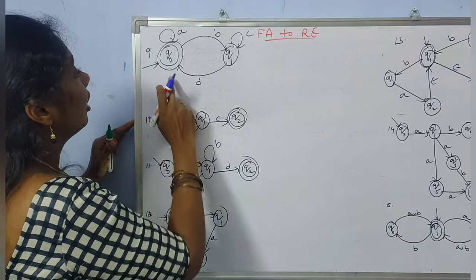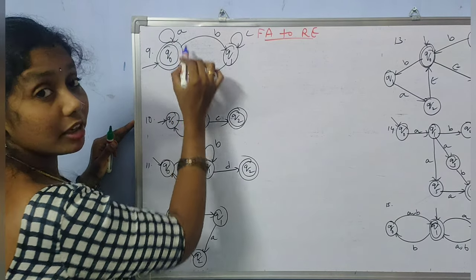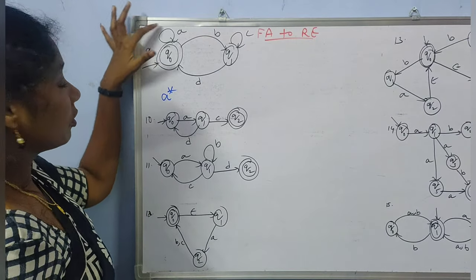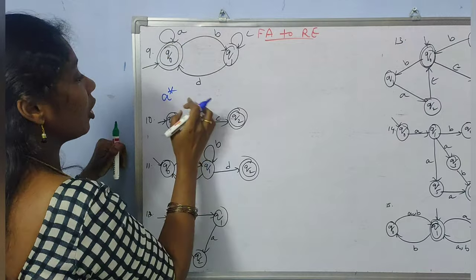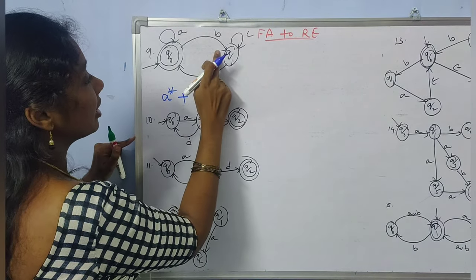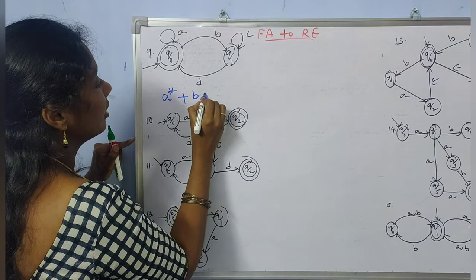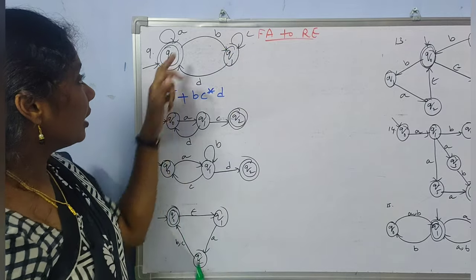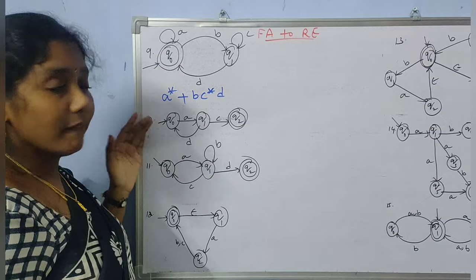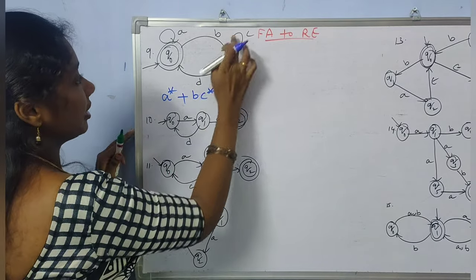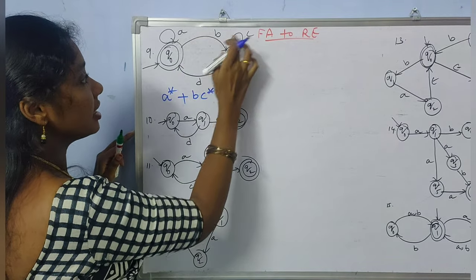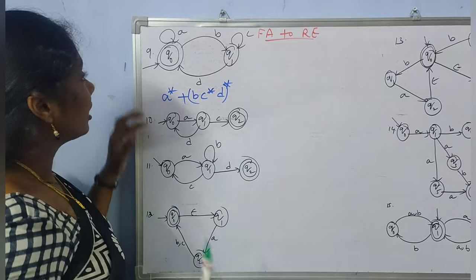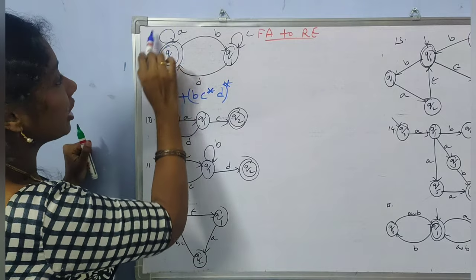While deriving the regular expression, concentrate on the path that starts from the initial state and leads to the final state. You need to identify all the symbols along that path. Consider the first finite automata. From the initial state, which is also the final state, you can take a transition with 'a' any number of times — giving 'a star'. Another choice is to move via 'b', then 'c star', then 'd', giving 'b c* d'.